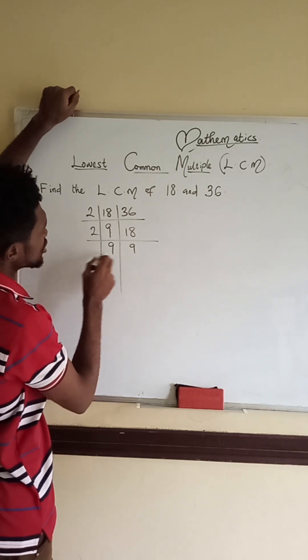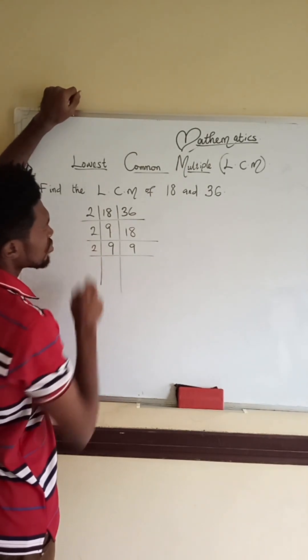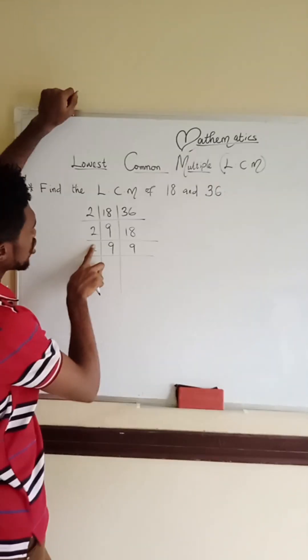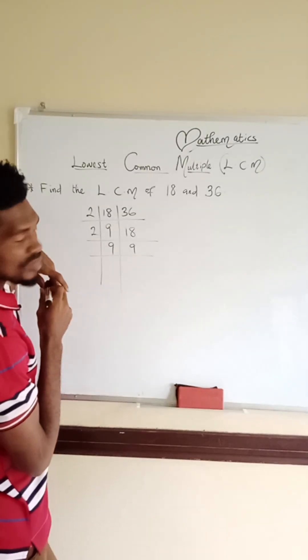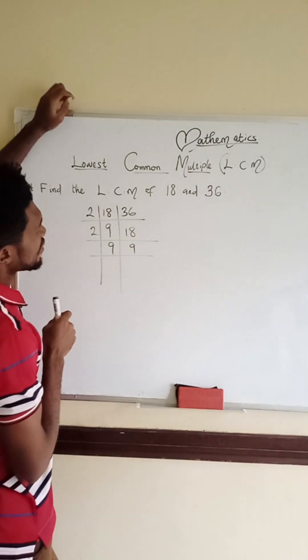So here, can 2 still go? Of course, no. 2 cannot go, because these 2 numbers are odd numbers. So we will go to the next prime number. The next prime number is 3.